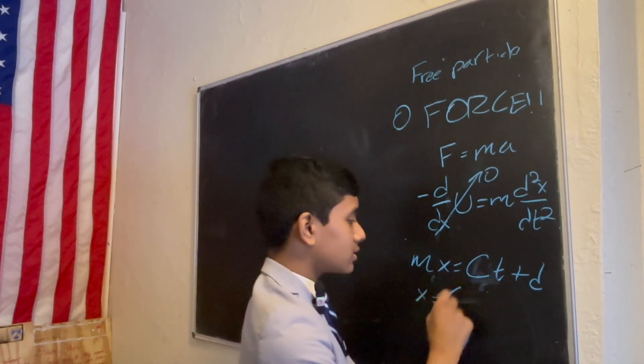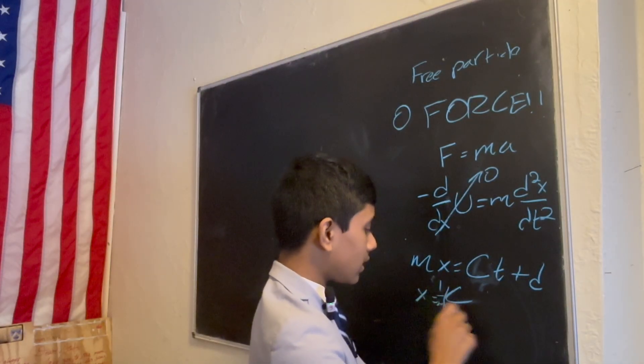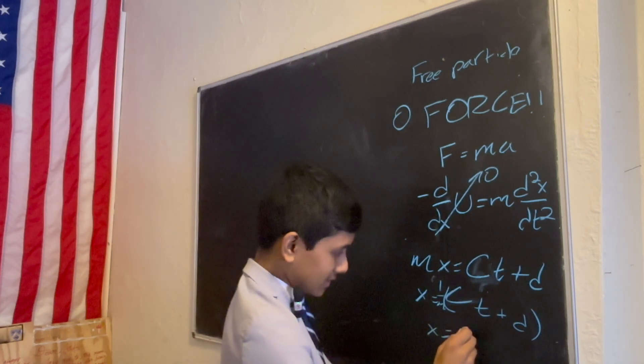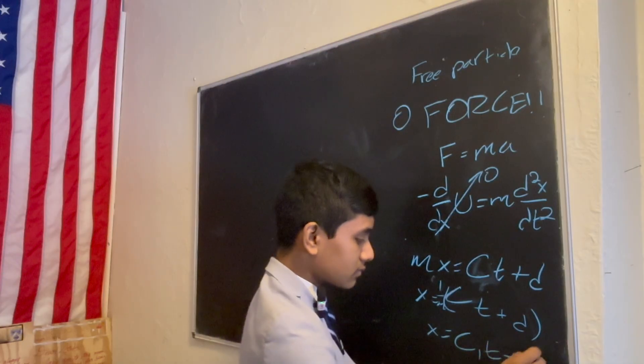ct plus d. So, x is equal to 1 over m times ct plus d. And at the end of the day, that's basically just c1 t plus c2.